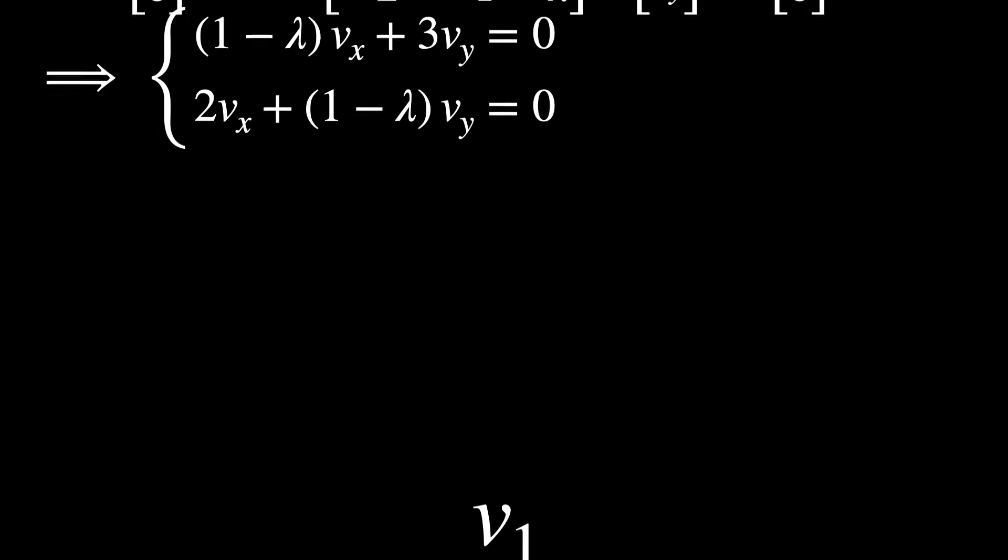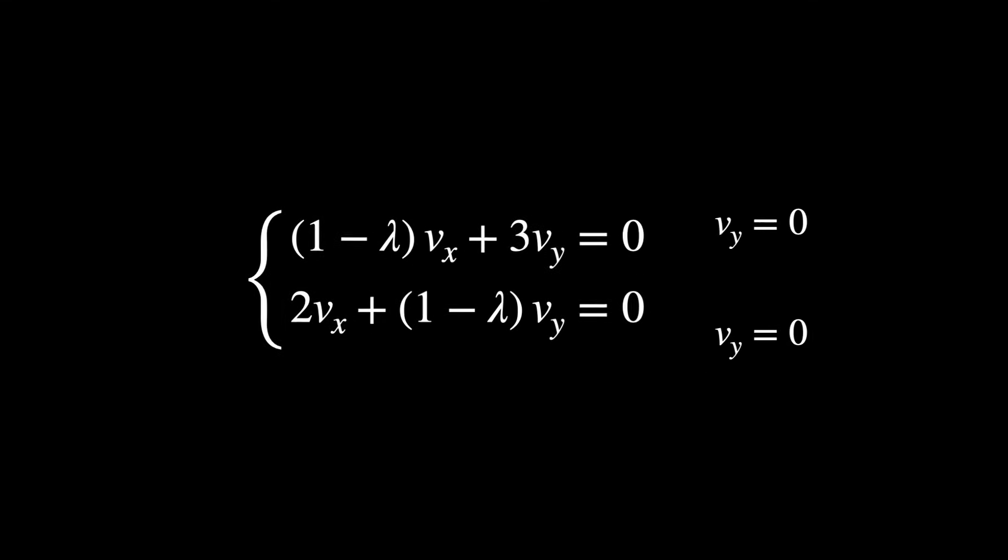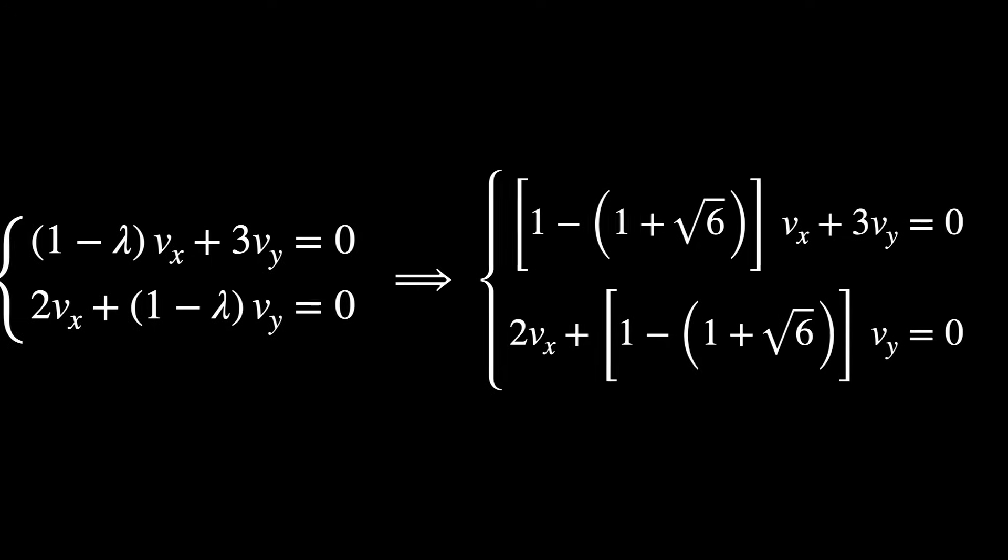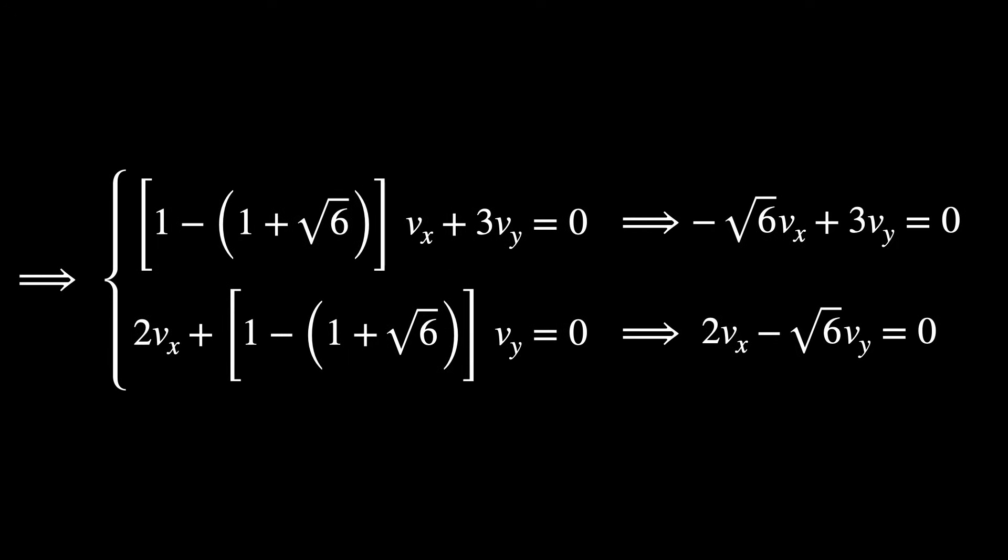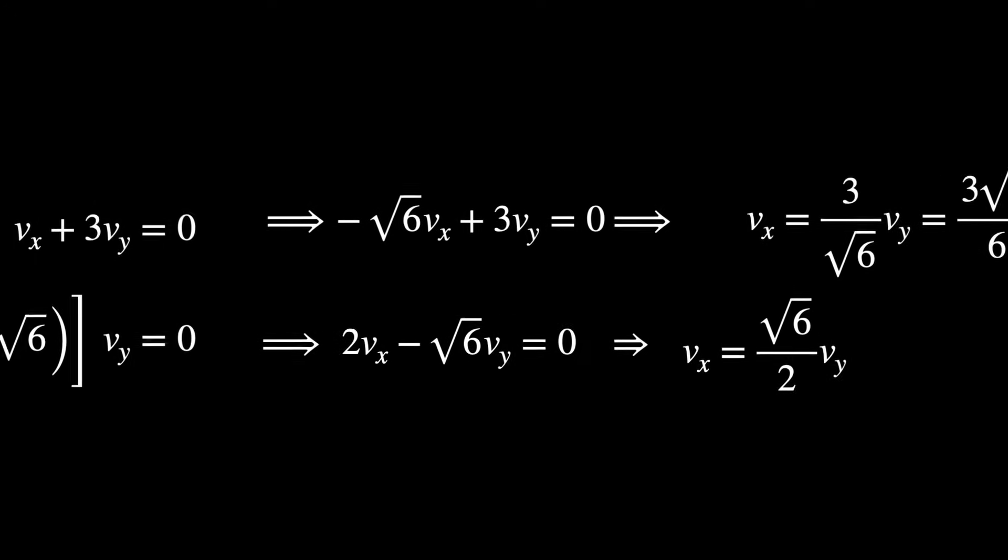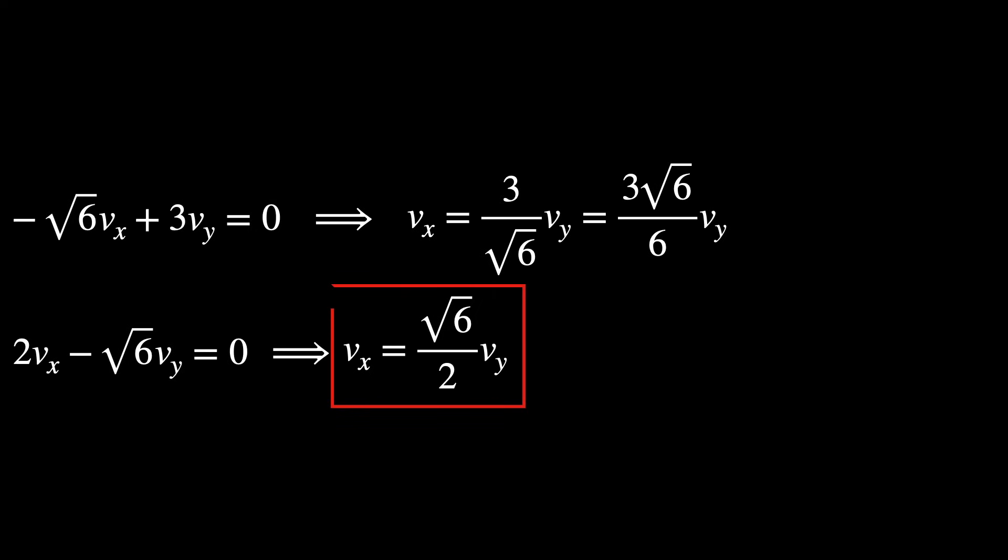Let's find the eigenvector V1 of the eigenvalue, lambda one, which is one plus the square root of six. So solving this linear system of equations, we'll find Vx equals to the square root of six over two, Vy.